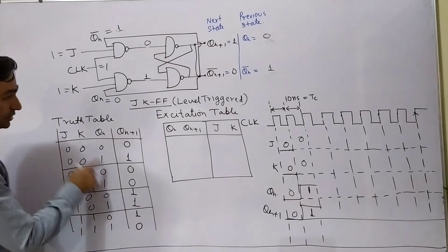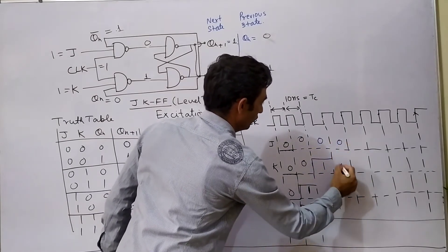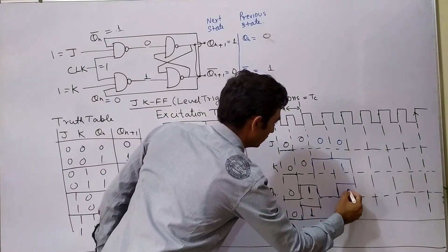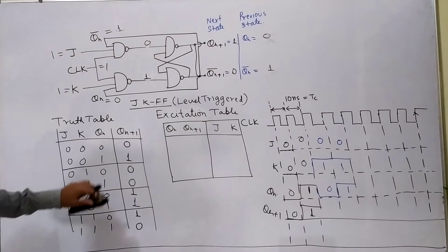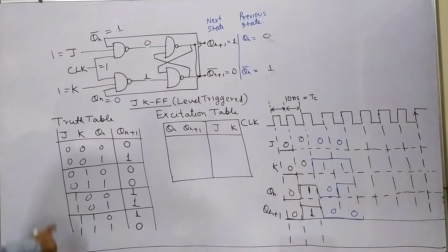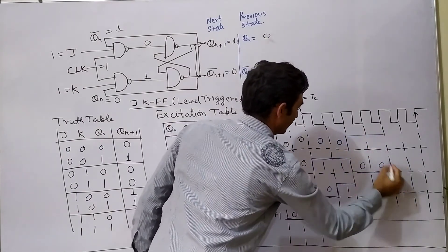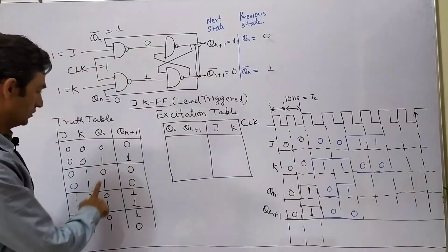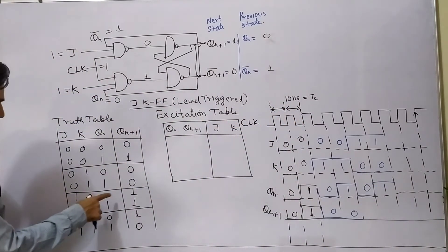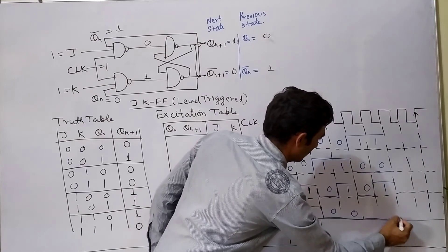For J=0, K=1, QN=0 — next state is 0. For J=0, K=1, QN=1 — next state is also 0. So in both cases QN+1 is 0. For J=1, K=0 — next states are 1, 1 in both cases. And for J=1, K=1 the output toggles. So in the timing diagram, QN+1 follows: no change for J=K=0, reset to 0 for J=0 K=1, set to 1 for J=1 K=0, and toggle for J=K=1.